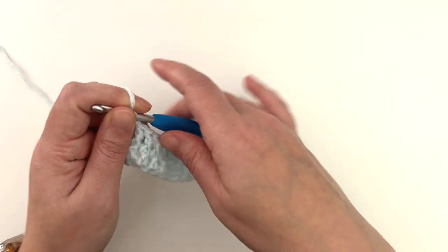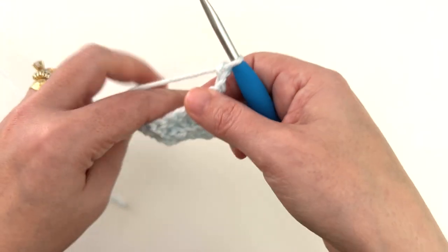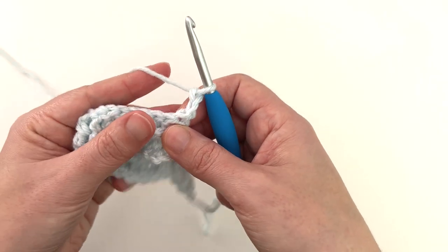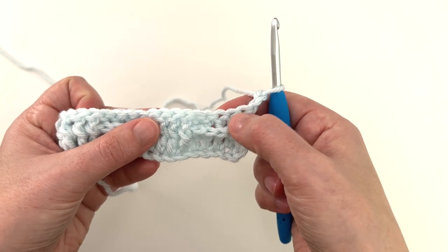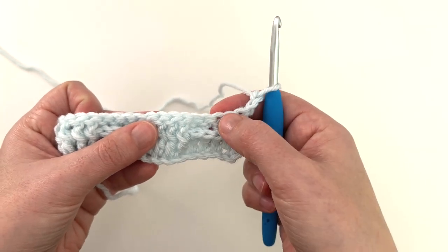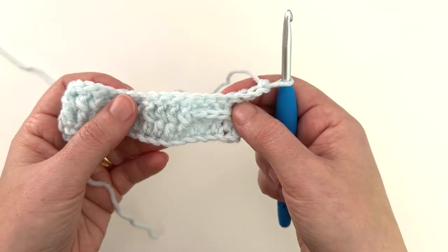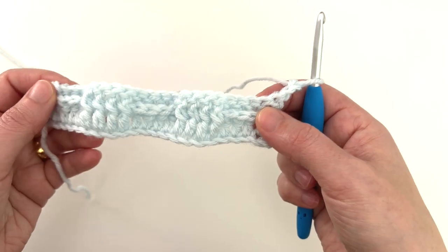For row three, chain two, turn your work. The chain two is always going to count as a stitch in this pattern. So take a look at what you have here. You can see that this appears to be a back post even though it was actually a front post in the row below. But we're going to work this row the way that it appears to us.